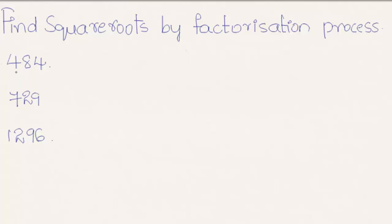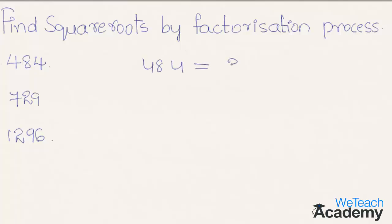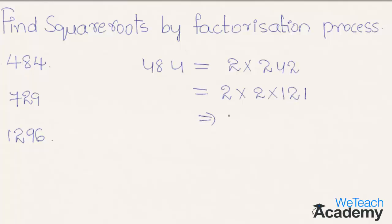Let us take the first example, that is 484, and factorize it. 484 can be written as 2 × 242, then as 2 × 2 × 121. Here 121 is nothing but 11 × 11, so we can write this as 2 × 2 × 11 × 11.